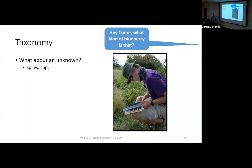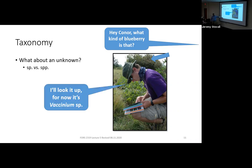Here's an example: we're on a field class and trying to figure out what that shrub in the background is. We know it's a blueberry — it looks like a blueberry, it's got blueberries on it — but we don't know what species it is. Vaccinium is the genus for blueberries, and for right now we don't know what species it is. So we'd write Vaccinium sp. — meaning one individual, one species, but we don't know the specific epithet.